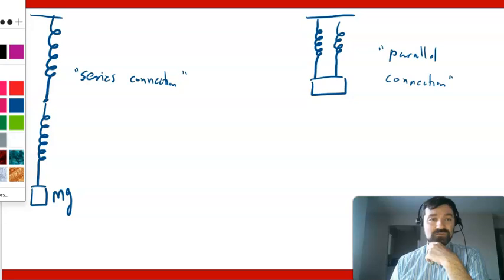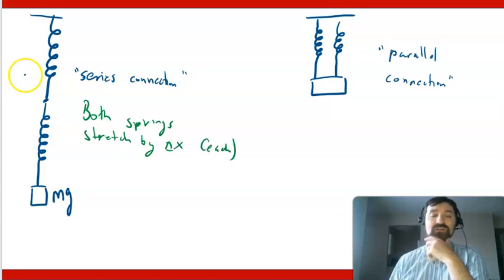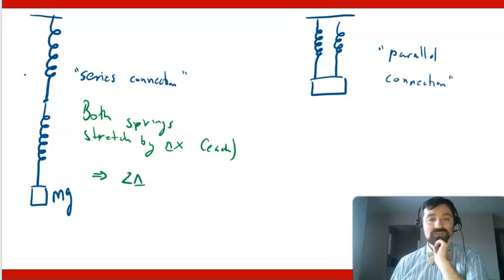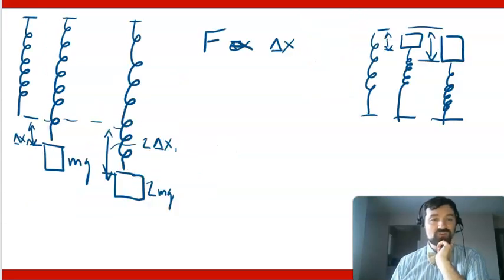So let's write that here. Both springs stretch by delta x each. And so total 2 delta x total stretch. But for the same amount of force as what we had over here with 1 mg on this spring.